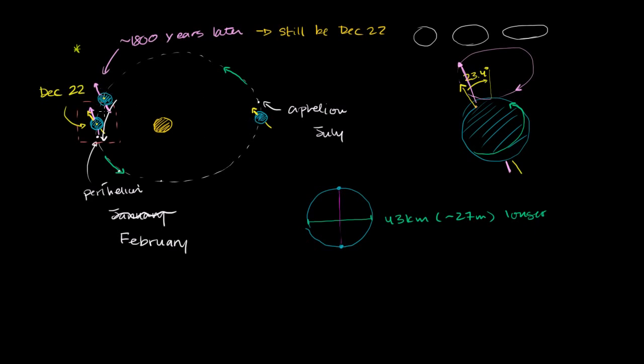So even though if we wait 1,800 years, like the example I gave, we will be most tilted away from the sun and the northern hemisphere will have its winter solstice at an earlier point in the orbit. According to our calendar, it will still be December 22nd.